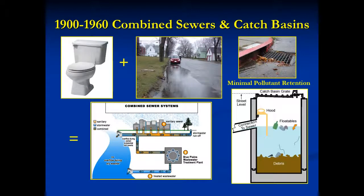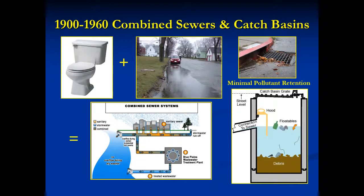Here you see an example of the type of stormwater management practiced before the 1970s. Toilet water and street runoff would be carried in the same combined sewer pipes to a wastewater treatment plant. This worked fine during low volume rains, but the sewers would overflow during higher volume floods, causing extensive pollution. Catch basins did capture gravel and coarser objects.